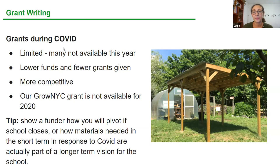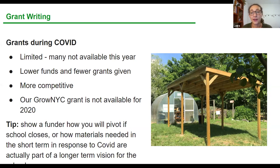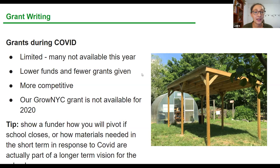Our biggest tip — and this might be the main takeaway from today's workshop — is that this year, especially with COVID, when writing your grants you need to show how you are responding to COVID and how this project will benefit your school community both during COVID and in the long term. Show them how you'll pivot if school closes, and how materials needed in the short term to create an outdoor classroom — to reduce spread of possible coronavirus — will actually be built and used for years to come as part of a longer-term vision.